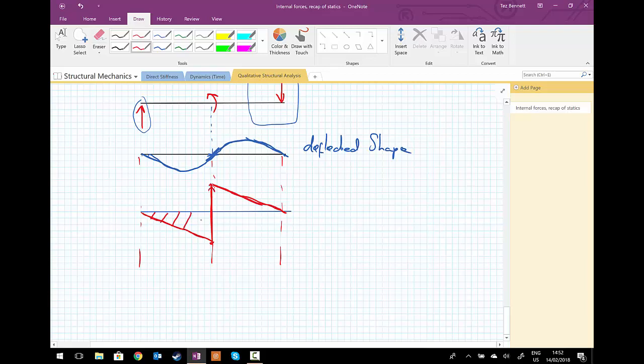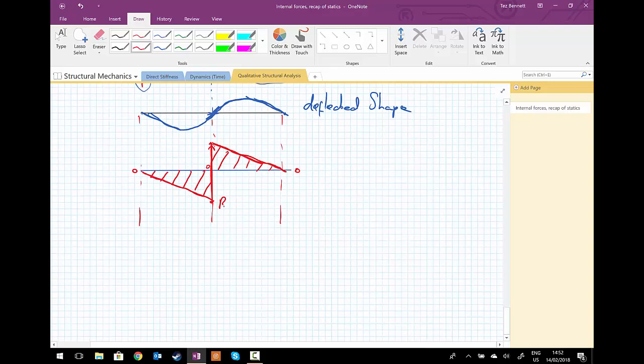So it goes from zero, zero, and goes through zero in the center. And this value would have to be, so whatever one of the reactions are, multiplied by L upon 2.